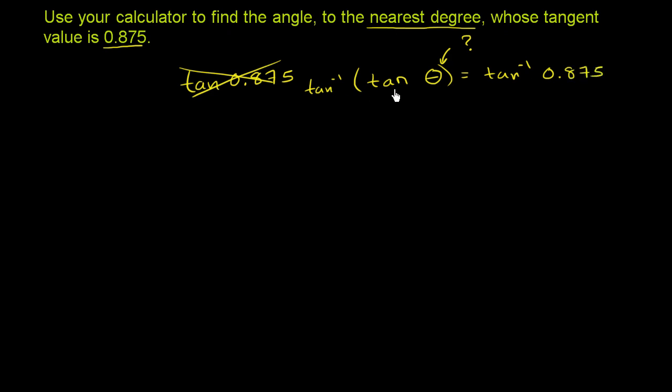On the left-hand side, you're just left with the angle. The inverse tangent of tangent is just your original angle. And on the right-hand side, you get the inverse tangent of 0.875.